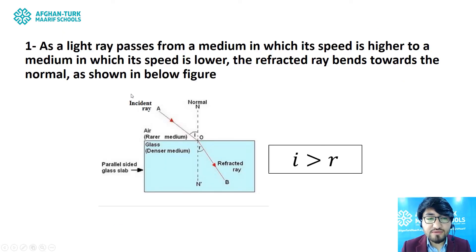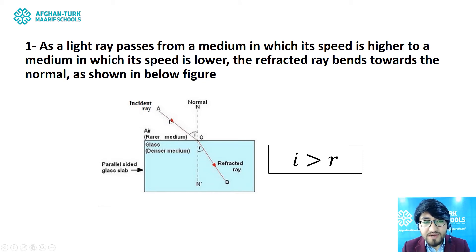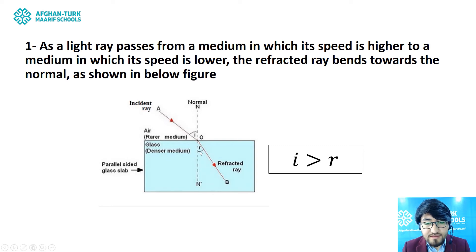Now, condition 1: when a light ray passes from a medium in which its speed is higher to a medium in which its speed is lower — for example, from air (rarer medium) to glass (denser medium) — the refracted ray bends towards the normal. In this case, the angle of incidence I is bigger than the angle of refraction R, because the refracted ray bends towards the normal.